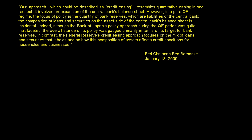To get a better understanding of quantitative easing in the American context, especially the context that Ben Bernanke is talking about, I want to read this quote from a speech that Ben Bernanke gave at the London School of Economics on January 13, 2009. So this is shortly after a lot of the craziness of the financial crisis was happening, but it was still going on. He says: 'Our approach, which could be described as credit easing, resembles quantitative easing in one respect.'